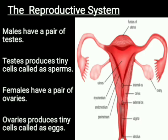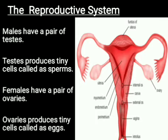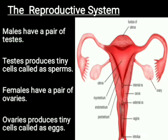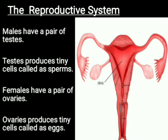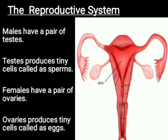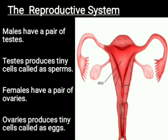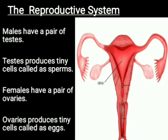Males have a pair of testes, whereas females have a pair of ovaries. Male testes produce tiny cells called sperms. Females have a pair of ovaries, and ovaries produce tiny cells called ovules or eggs. So, eggs or ovules are tiny cells produced by ovaries in females.